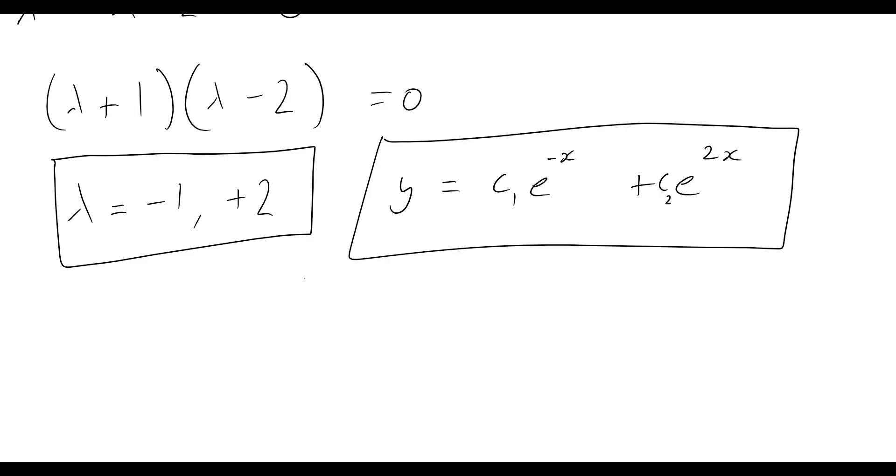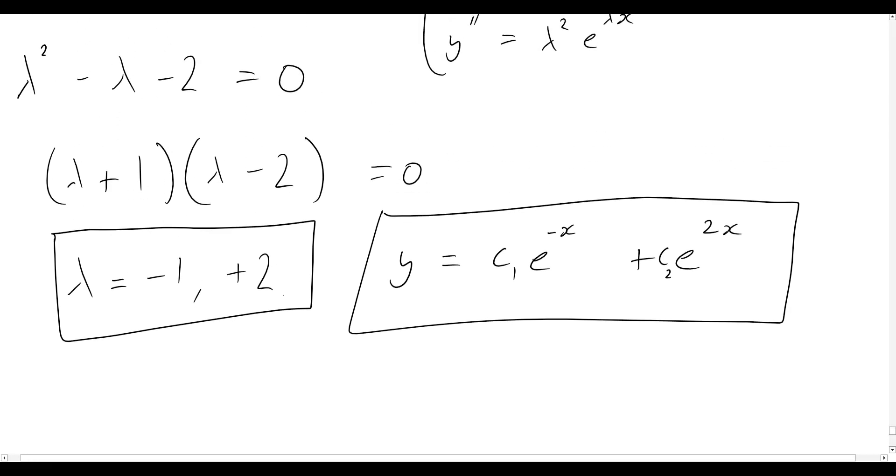So let's quickly consider another scenario where you would end up with two complex conjugate roots to this quadratic expression here. It follows through very much the exact same procedure, except you'll just end up using Euler's formula and then be able to rewrite everything in the end, in terms of sine and cosine, and of course using the imaginary unit appropriately there.